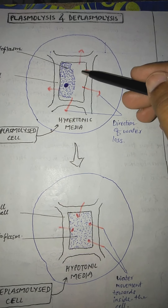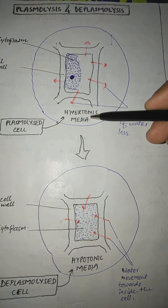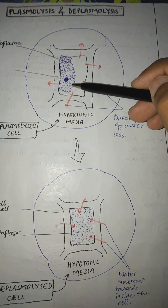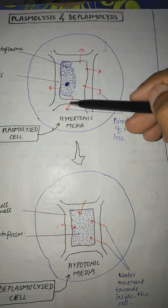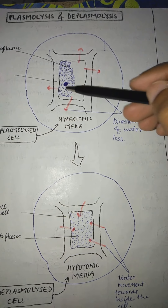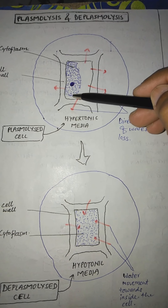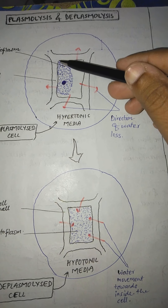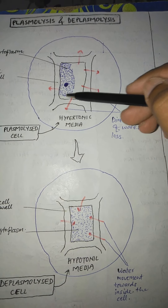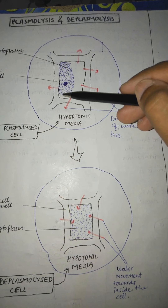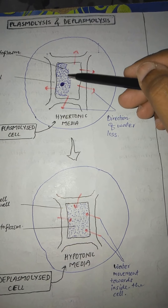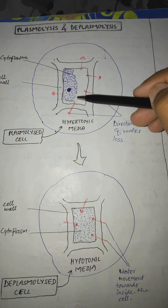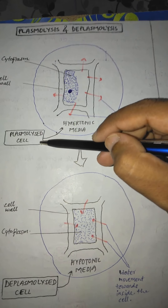When these kinds of cells are placed inside a hypertonic medium, the water molecules mainly present inside the cytoplasm of the cells move from inside towards the outside direction. The cytoplasm of the placed plant cells then shrinks and locates itself at one corner. This phenomenon of shrinkage of cytoplasm due to placing the cell into a hypertonic medium is known as plasmolysis, and these kinds of cells are considered plasmolyzed cells.